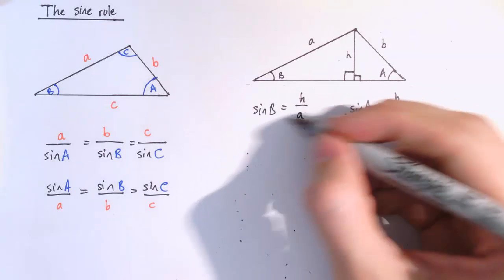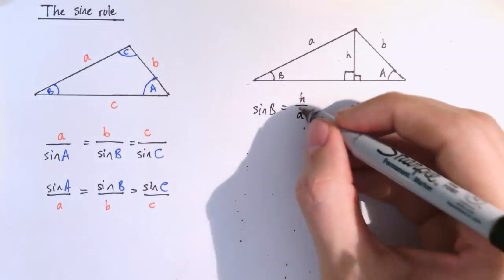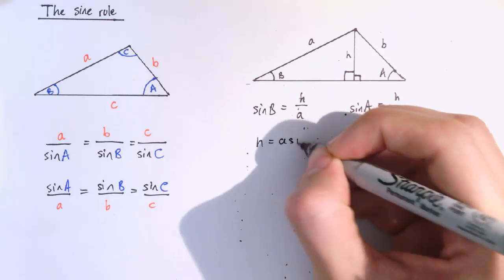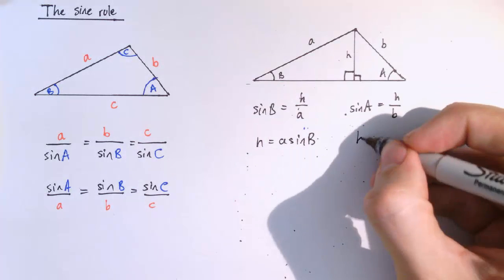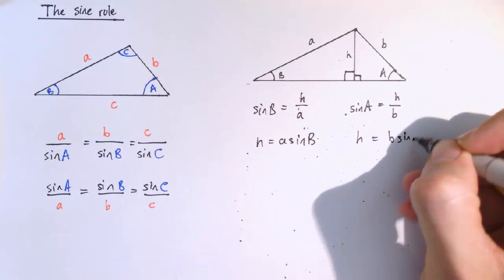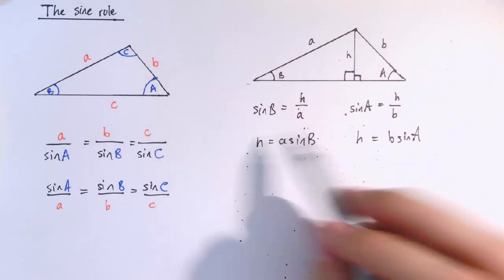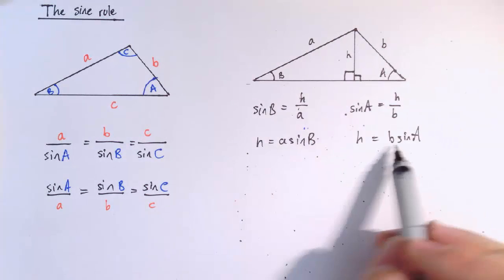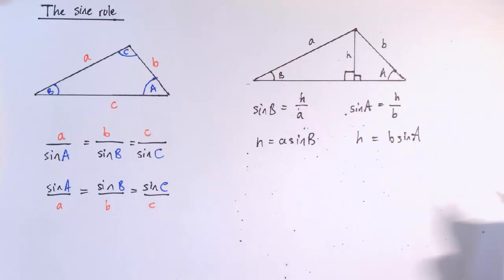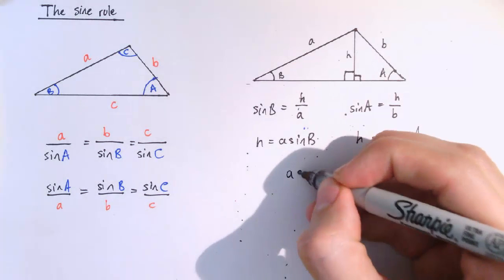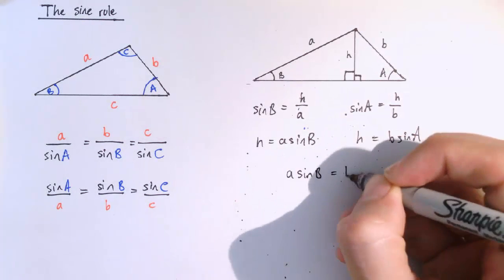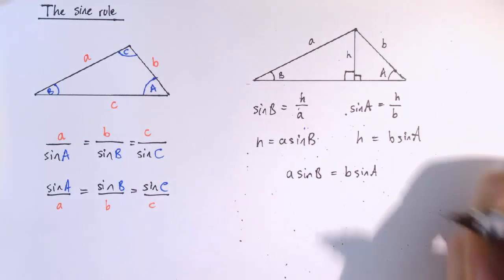So actually, if I make these both h equals, make h the subject in each of them, I get h equals a sine b and h equals b sine a. So this height can be expressed in two different ways, either as a sine b or b sine a. So we've got a sine b equals b sine a.